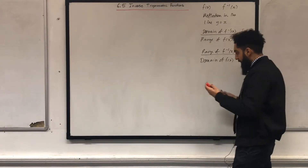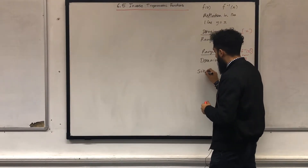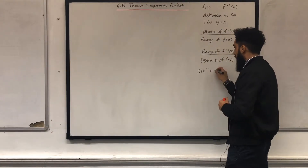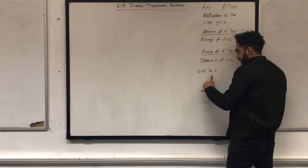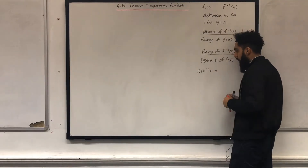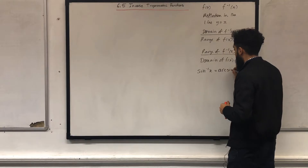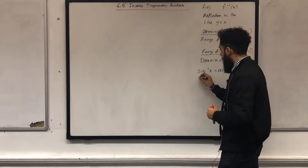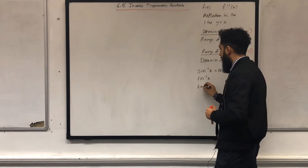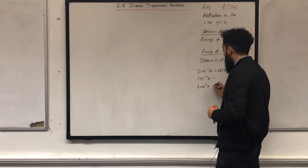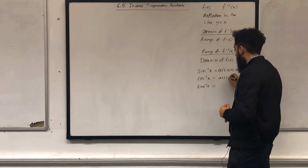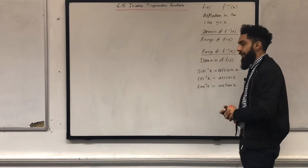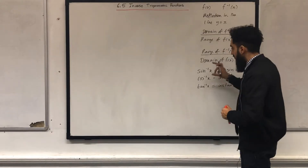Let's look at sine to the power minus 1 of x — sine inverse of x. The notation we are going to use for sine inverse of x will just be arcsin x. In the same way, for cos inverse of x and tan inverse of x, we will be using arccos x and arctan x, respectively. Very important notations.